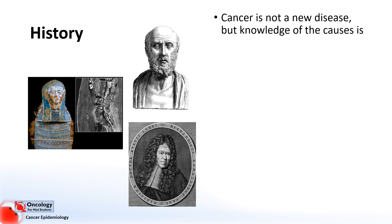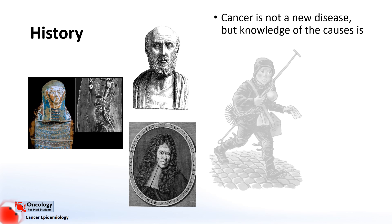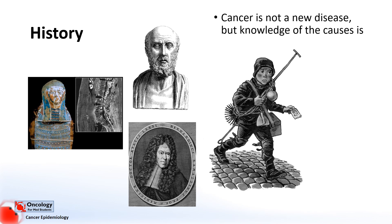Bernardino Ramazzini wrote a book in 1713 where he postulated that the reason nuns were more likely to develop breast cancer was because of their celibacy. This is an idea that amazingly holds up even today — we now know this is because of hormonal influences. In 1775, a man called Percival Potts recorded an association between scrotal cancer and chimney sweeps. This was considered one of the first milestones in the development of modern epidemiology. For the first time, an occupational or work-related cause was identified for a disease, with the possibility of prevention.